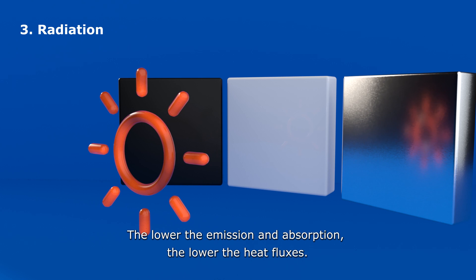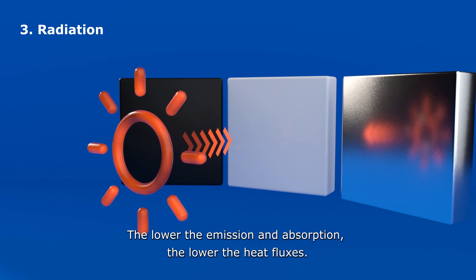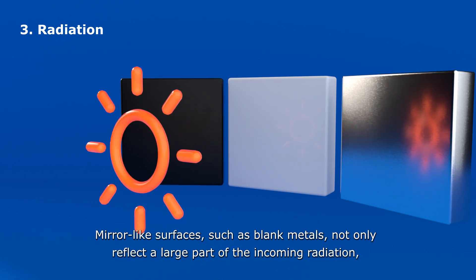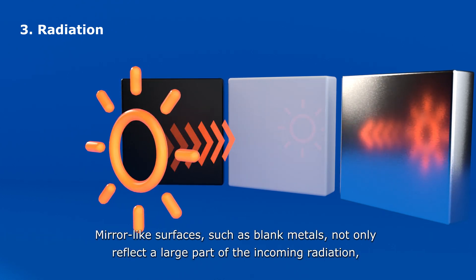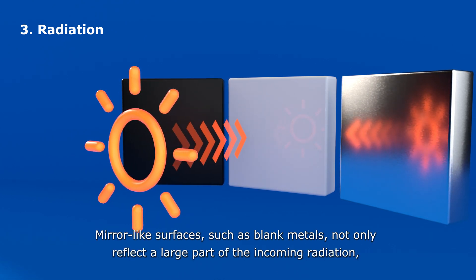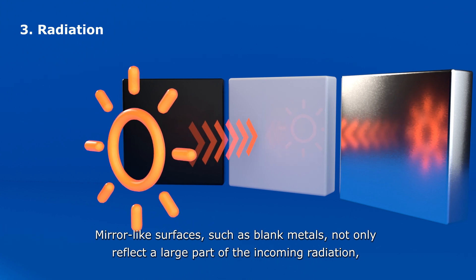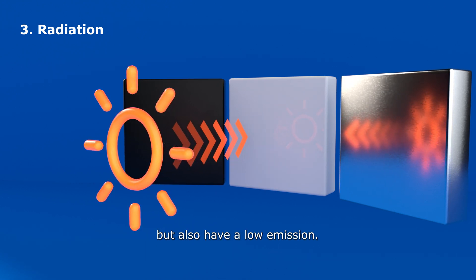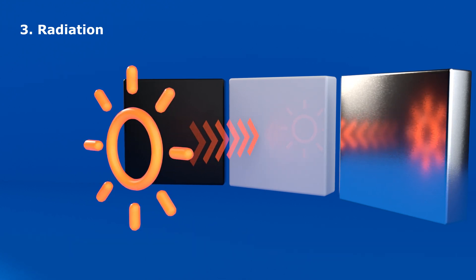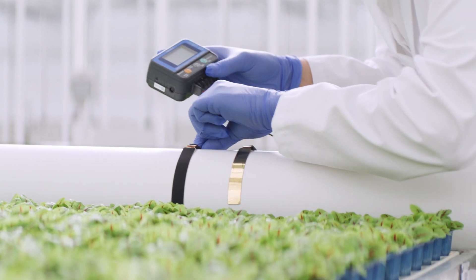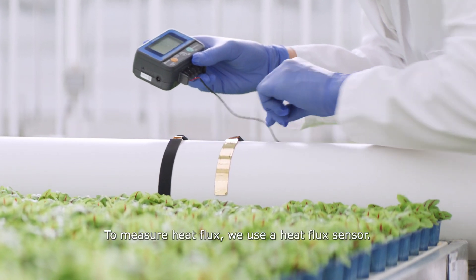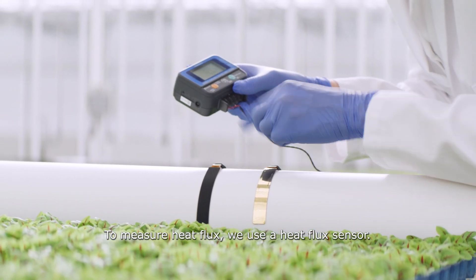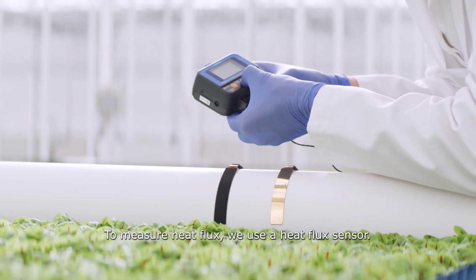The lower the emission and absorption, the lower the heat fluxes. Mirror-like surfaces such as blank metals not only reflect a large part of the incoming radiation but also have a low emission. To measure heat flux, we use a heat flux sensor.